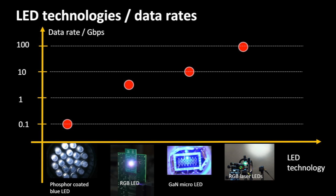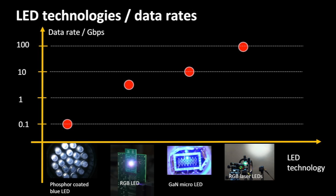So depending on what source we use, we can get different data rates out of it. With the phosphorous coated LED, the limit is roughly about 100 megabit per second. We have recently shown in an experiment that with a single micro LED, we can achieve record speeds of 8 gigabit per second.